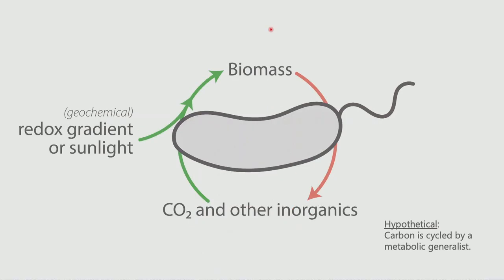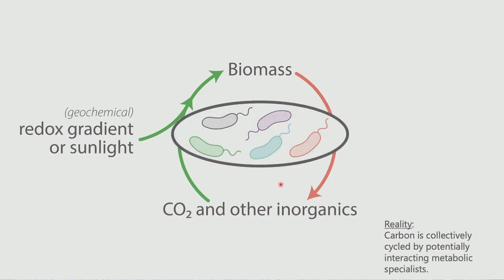Talking about collective metabolism, let's do this little hypothetical thought experiment where we are concerned with an ecosystem function of interest — in this case, carbon cycling. We could think that this is done by an extremely generalist microbe that has the capacity to use some sort of redox gradient or sunlight to fix CO₂ and other inorganics into biomass, and also to recycle biomass back into its constituent substrates. But because we can sequence ecosystems, we know there's actually not a single very generalist organism, but instead a whole community of more specialized organisms. These organisms often interact metabolically, and so carbon cycling becomes a collective process — a collective function of the community.